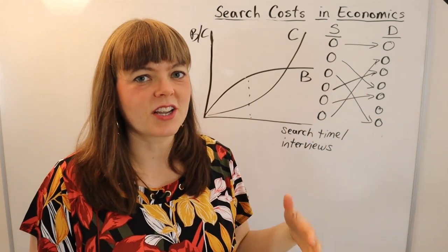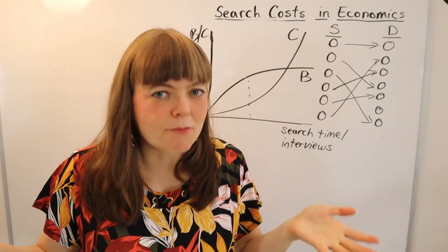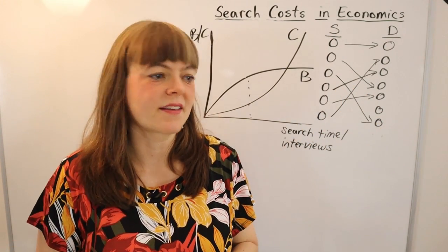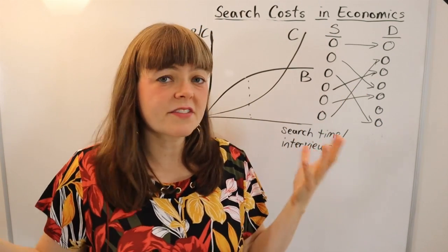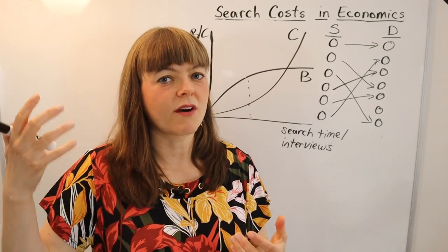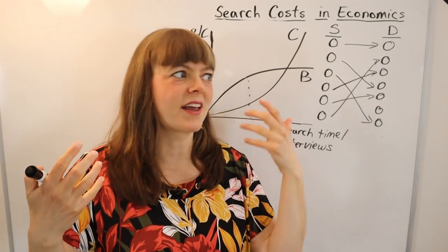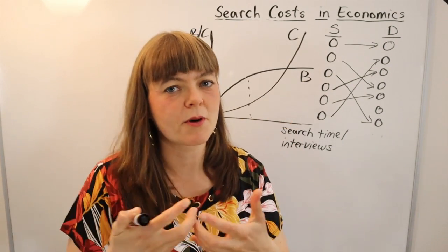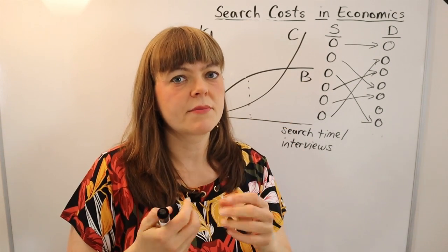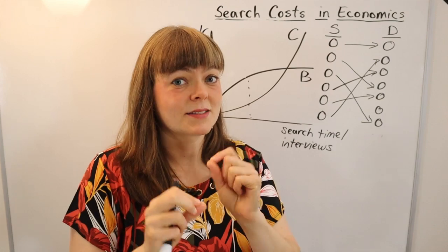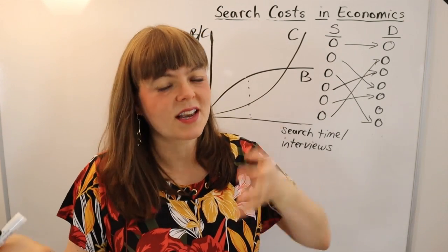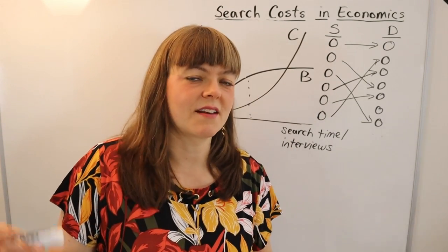You might also think of dating markets, which can be modeled this way. Many situations involve one side of a market trying to match with the other side, seeking the best match — which might be both qualitative and quantitative.